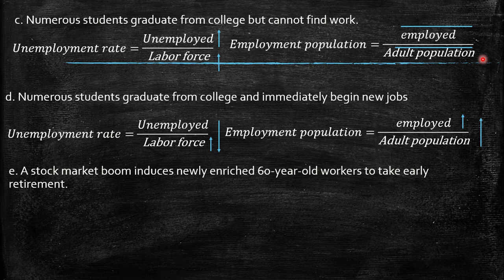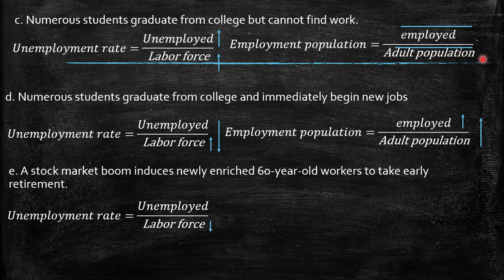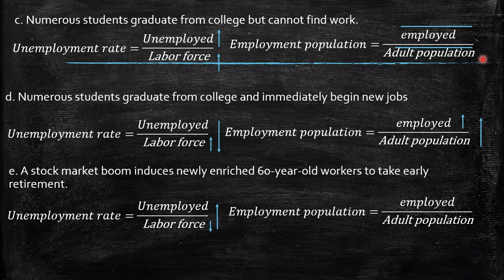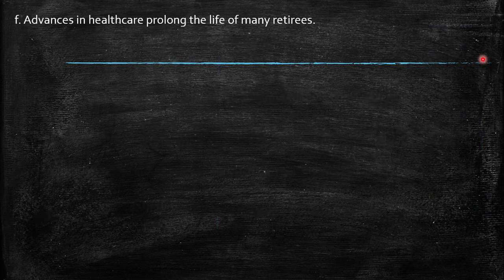E: a stock market boom induces newly enriched 60-year-old workers to take early retirement. The labor force decreases because many employed people leave. There is an increase in the unemployment rate because labor force decreases while unemployed remains relatively stable. Regarding the employment-population ratio, employed decreases but they remain adults, so there is a decrease in the employment-population ratio.